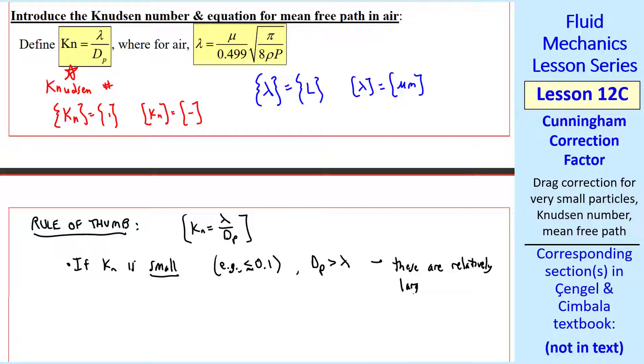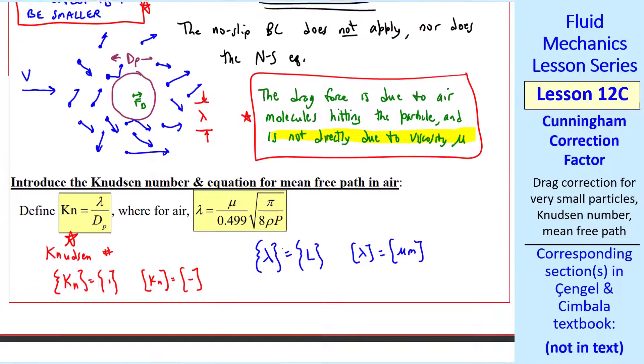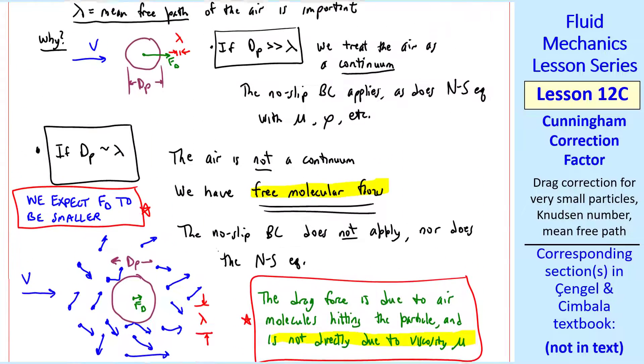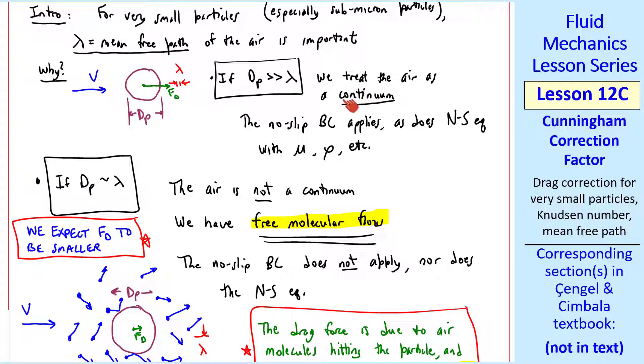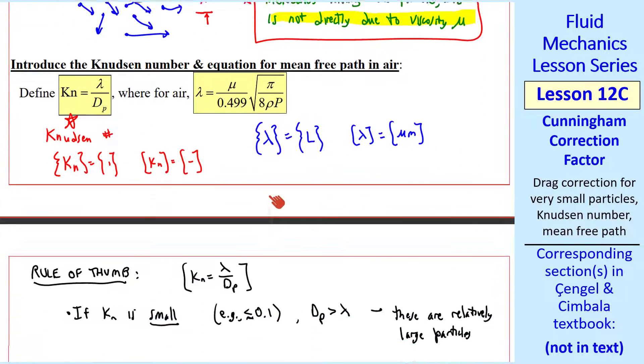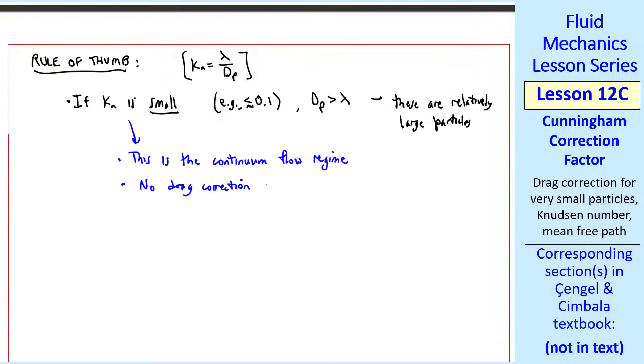So these are relatively large particles. This would be similar to this first case that I described here, where we treat the air as a continuum. So this case is the continuum flow regime. And no drag correction is necessary.